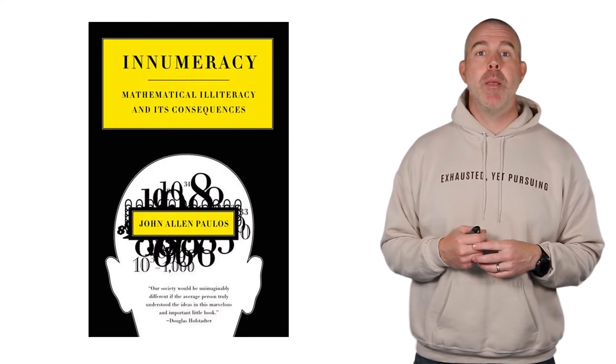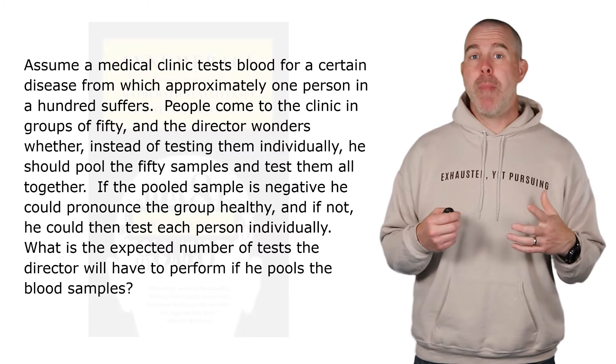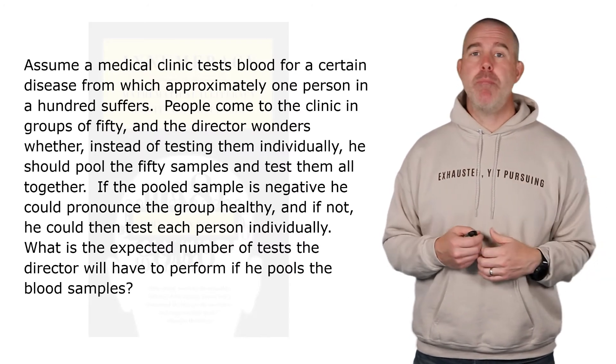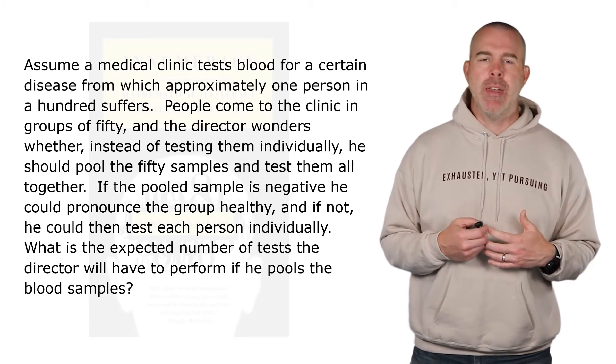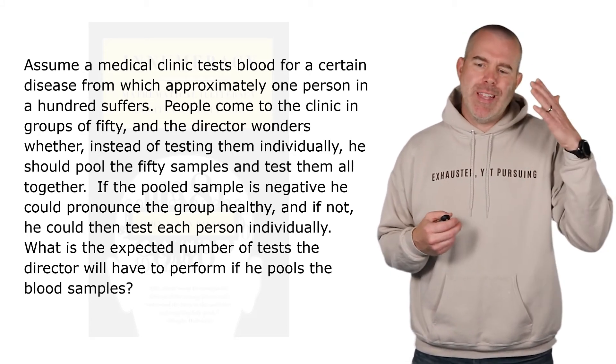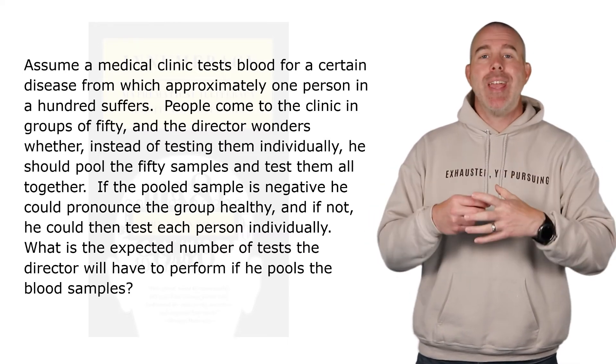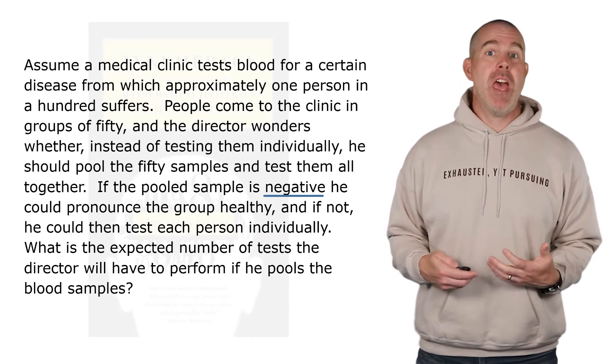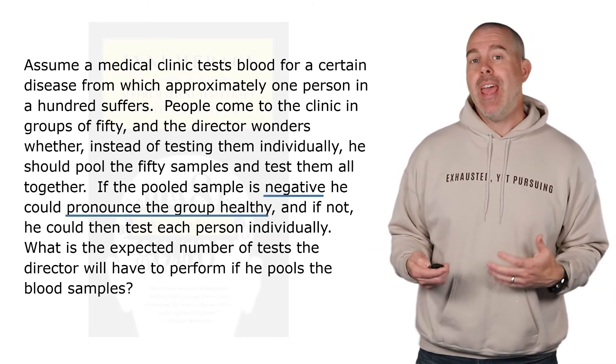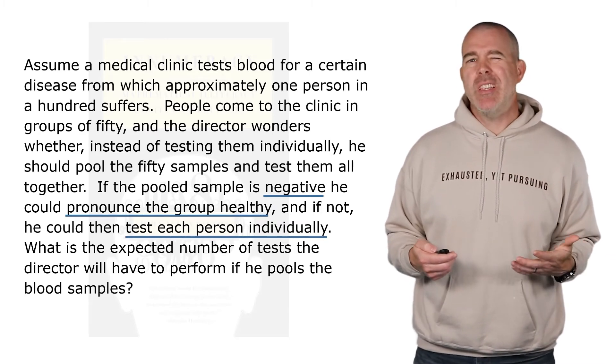All right, here's a different example in the book Innumeracy by John Allen Paulos. Suppose we have a medical clinic and they test people for a disease that one out of 100 people suffer from, with 50 people coming in, and we're wondering if instead of testing all 50 individually, we could pool them all together. And then if the test ends up negative, then all 50 are healthy. And then if not, what we'll do is we'll test each one individually.